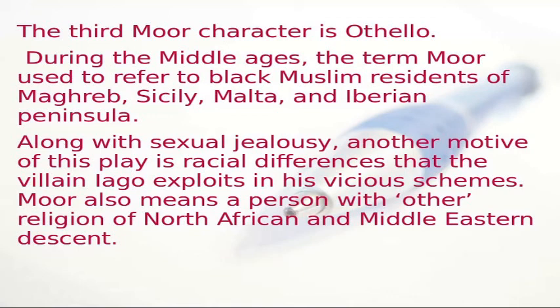During the Middle Ages, the term Moor used to refer to black Muslim residents of Maghreb, Sicily, Malta, and the Iberian Peninsula. Along with sexual jealousy, another motive of this play is racial differences, which the villain Iago exploits in his vicious schemes. Moor also means a person of other religion of North African and Middle Eastern descent.